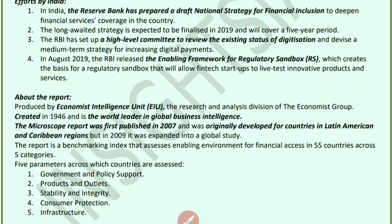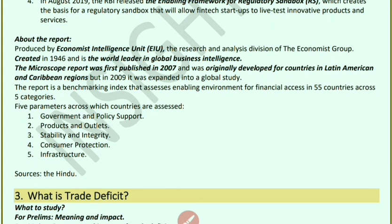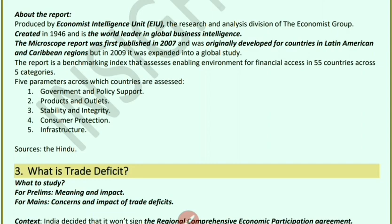About the report publishers: the Economist Intelligence Unit is the research and analysis division of the Economist Group, created in 1946 and a world leader in global business intelligence. The Microscope report was first published in 2007, originally for Latin America and Caribbean countries, and expanded to a global study in 2009. It is a benchmarking index that evaluates the enabling environment for financial access in 55 countries across five categories: government and policy support, products and outlets, stability and integrity, consumer protection, and infrastructure.